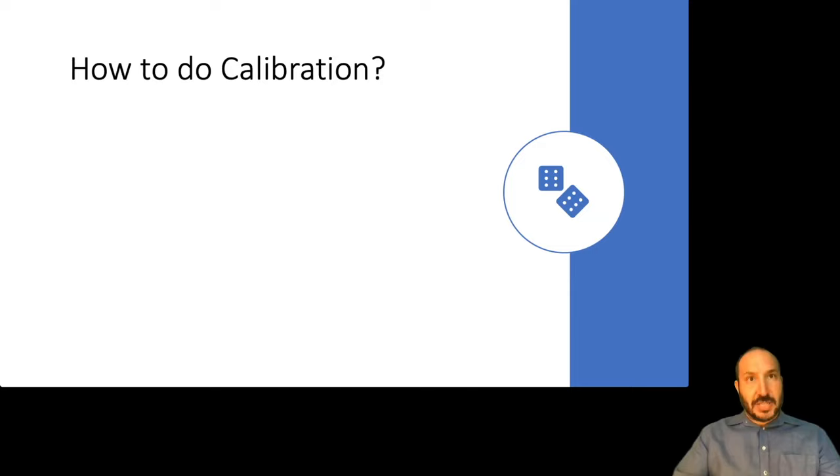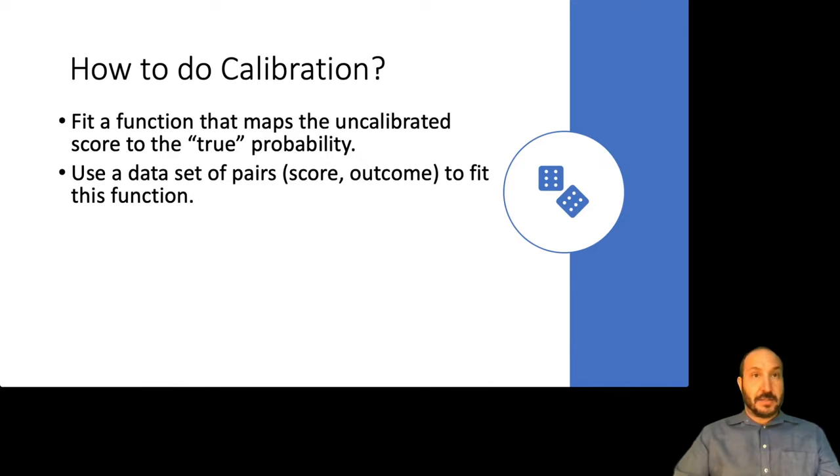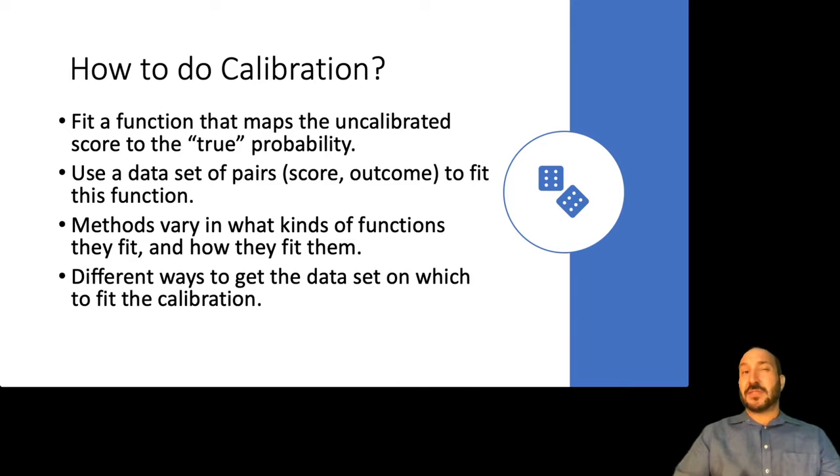So in general, how do you do calibration? Well, calibration is basically about fitting a function that maps that uncalibrated score to the true probability. And you need a data set of pairs of here was the score and here was the outcome to fit that function. And the different calibration methods really just vary in what kinds of functions they fit and how they fit them. And we'll also talk about there's different ways on which you might try to get the data set on which you're going to fit that calibration. So how do you get that data set of pairs of score comma outcome? So we'll discuss that over the course of this workshop.